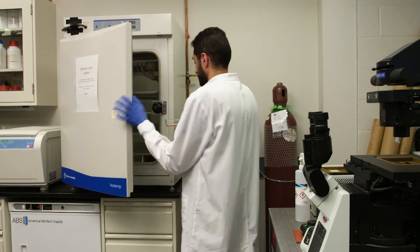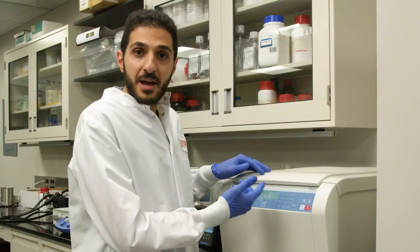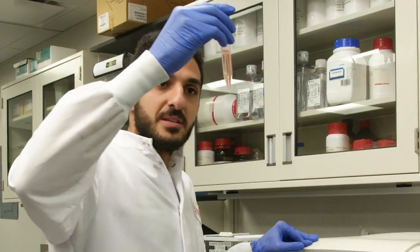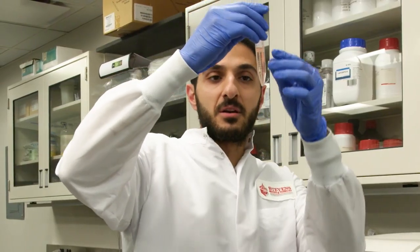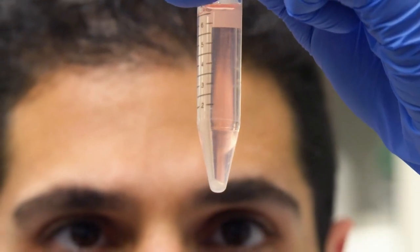After we have lifted the cells using trypsin and incubating them, we spun them down using a centrifuge and now we collected the cells. As you can see here, the cells are at the bottom here collected and now we can remove the excess media and start working with them.